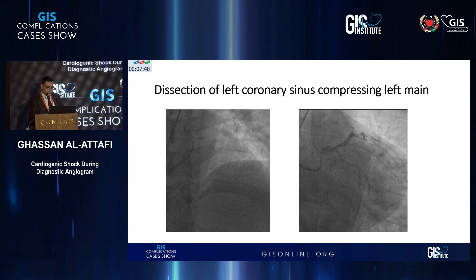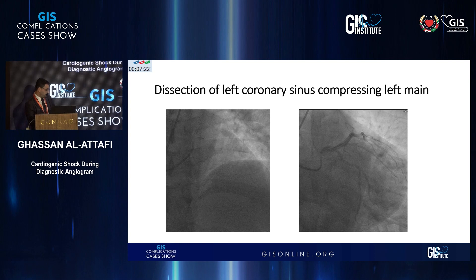For a left main stem dissection you don't want to take any chances, particularly if it was caused by the catheter, because you lifted the flap against the blood flow — this could propagate and cause a problem. You can't leave this. This is different from a stent dissection flap opposite the flow, which is not a problem. But this is a problem. You need to have a wire in fast — no more injection.